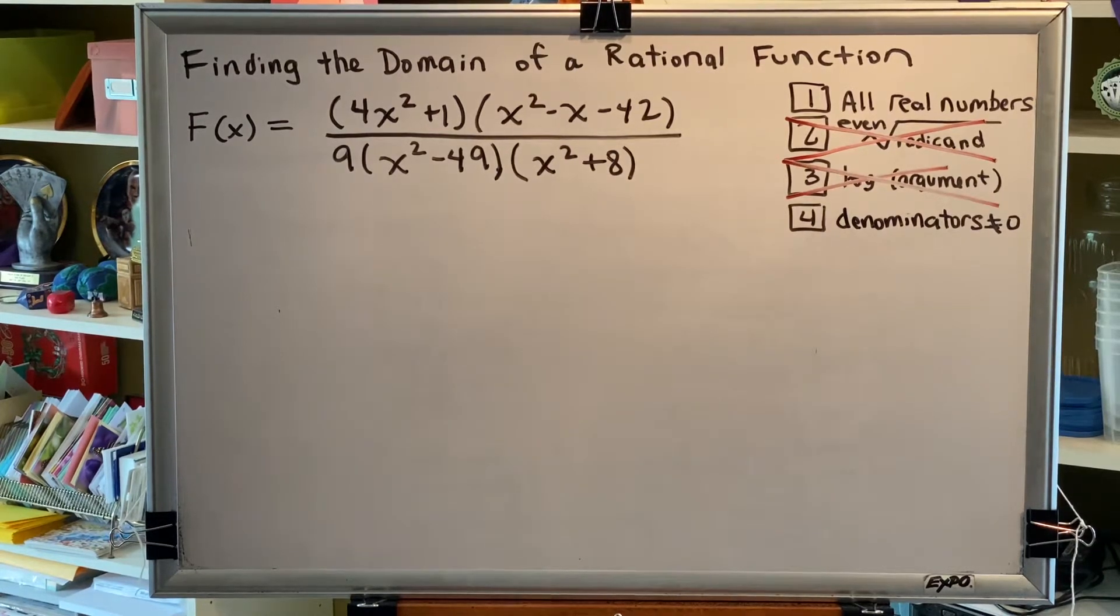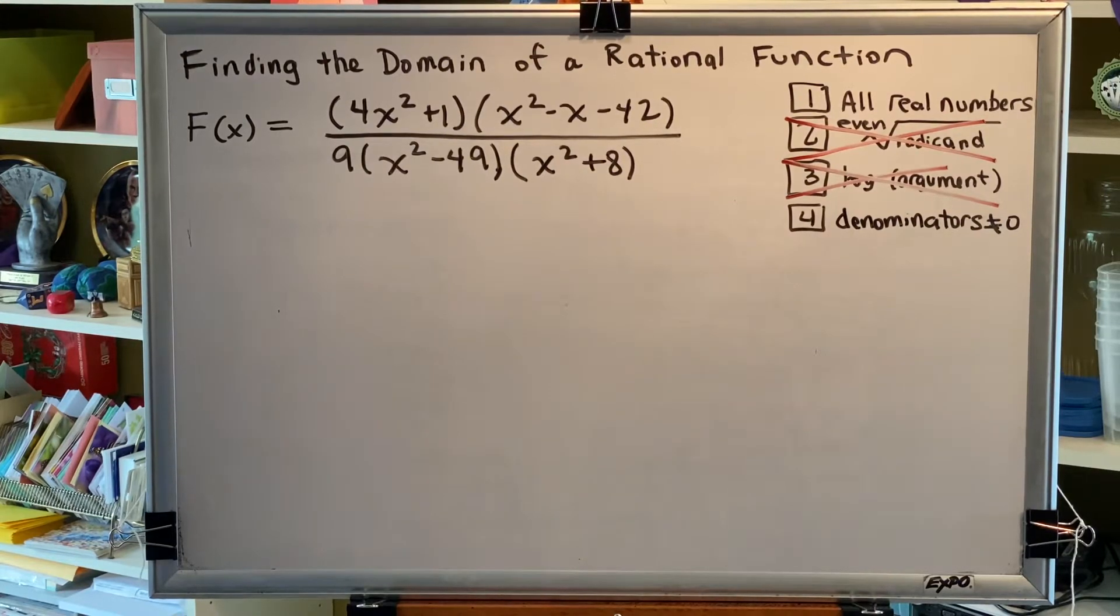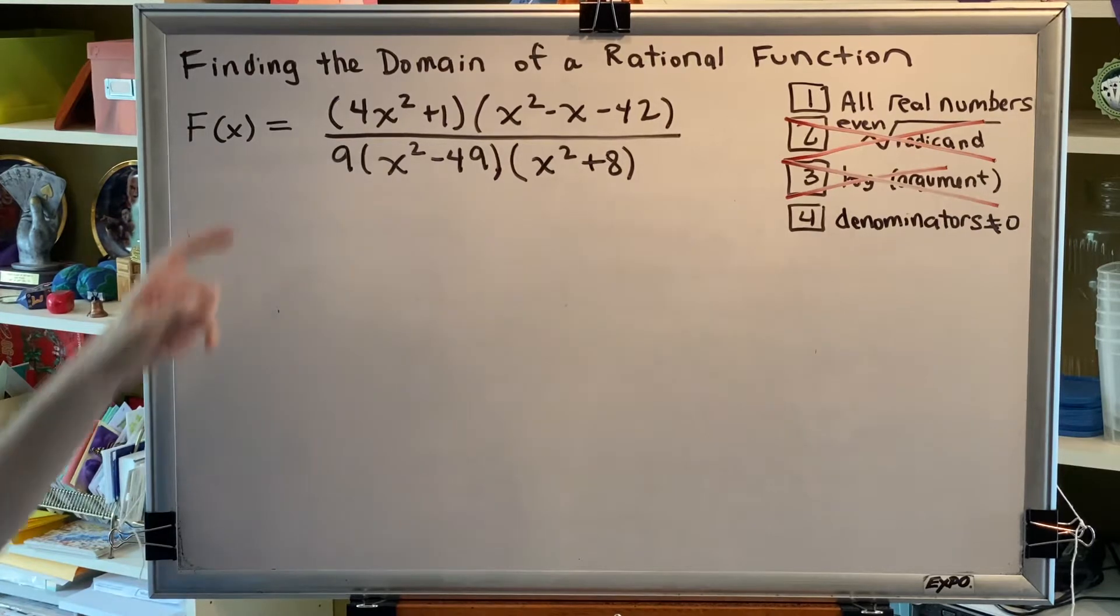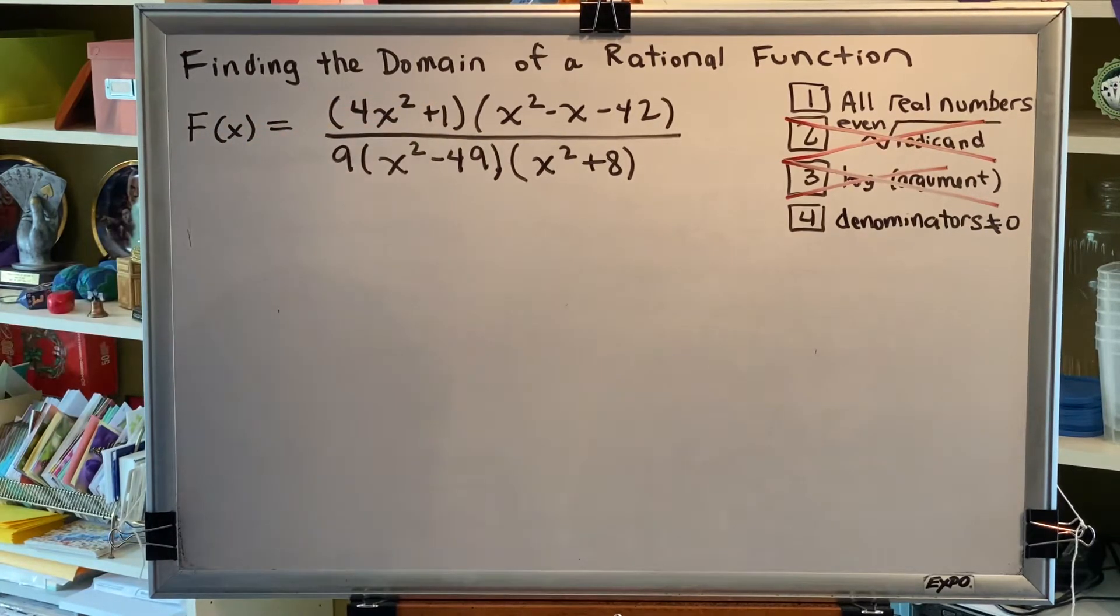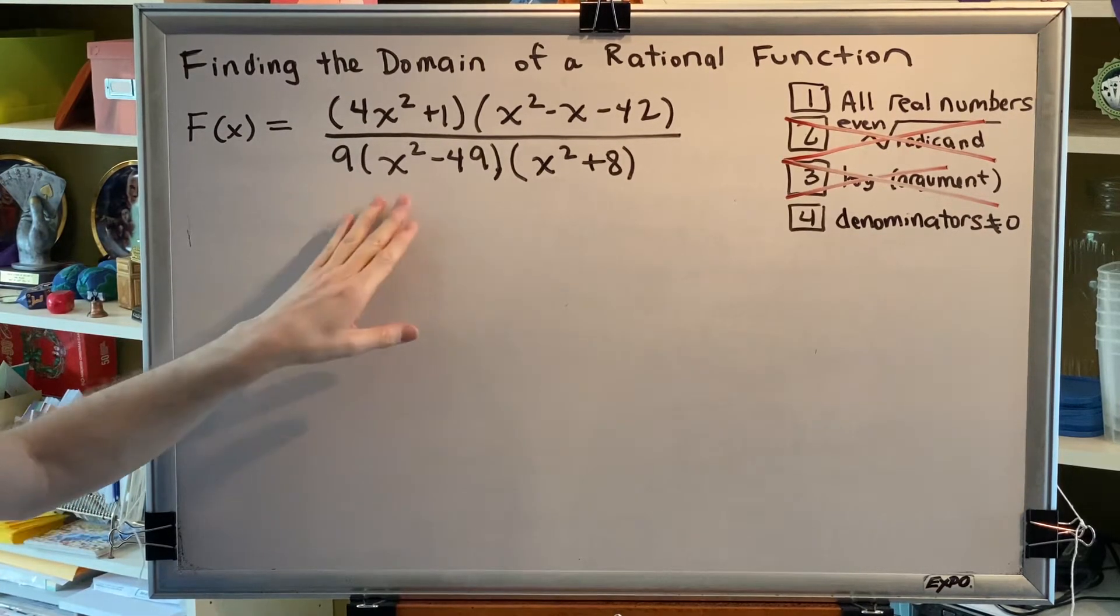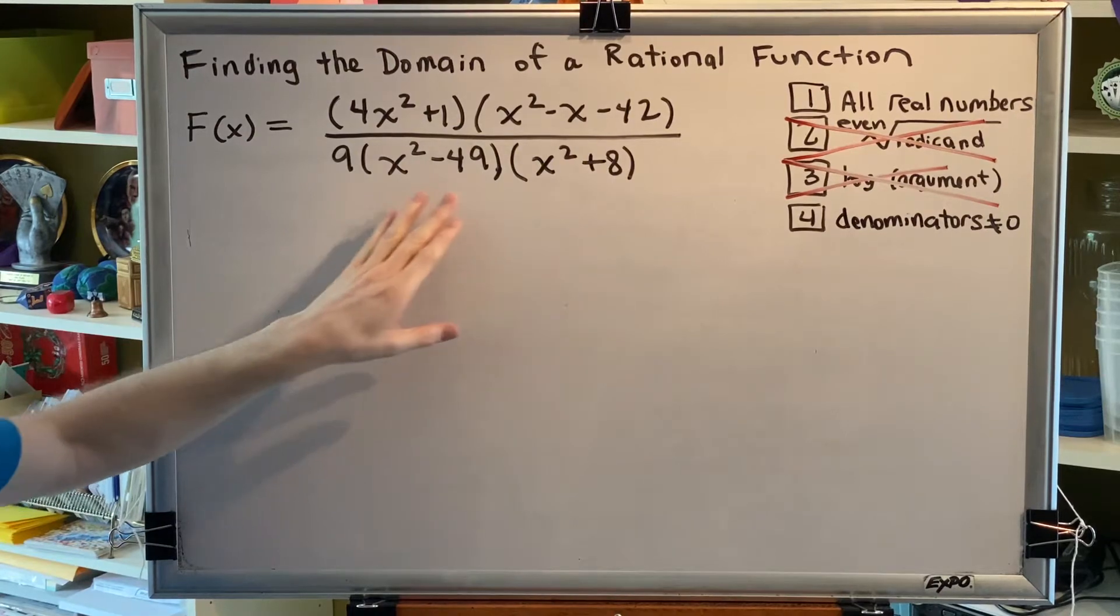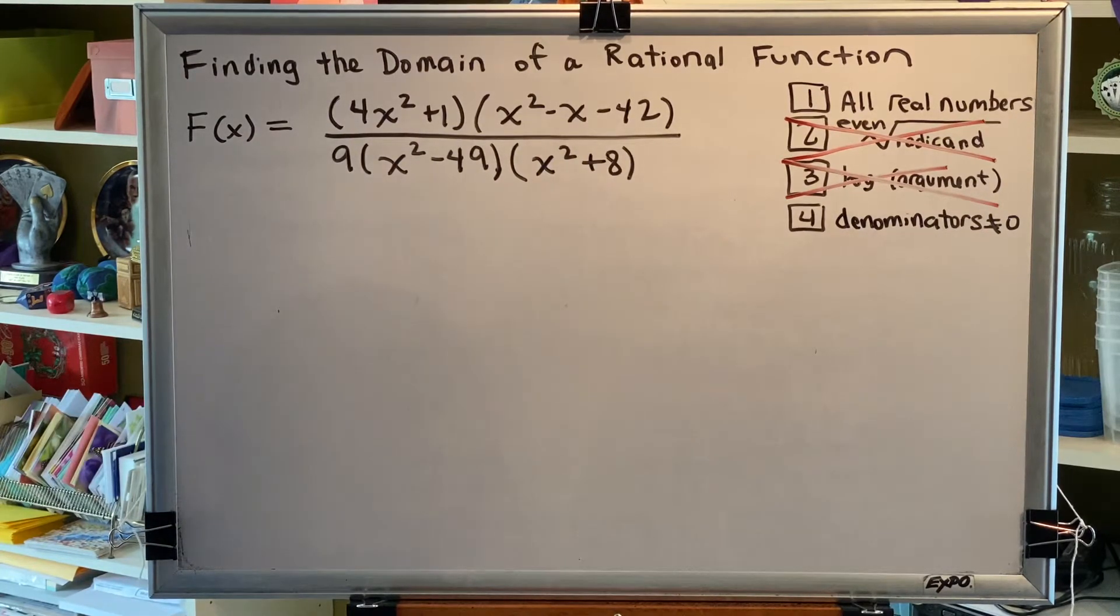The topic of this video is finding the domain of a rational function. Let's look at a problem. f(x) equals the rational function whose numerator is (4x² + 1)(x² - x - 42), and whose denominator is 9(x² - 49)(x² + 8).